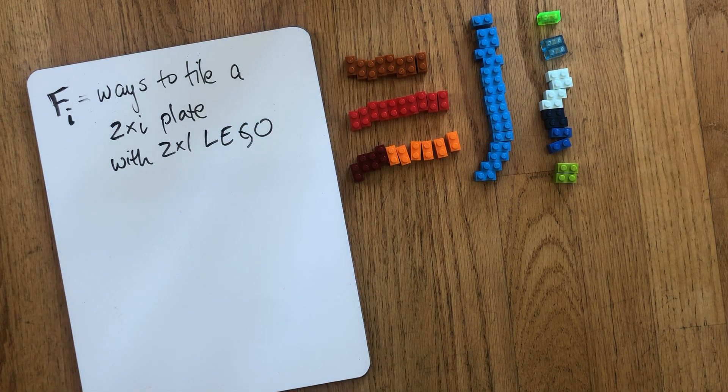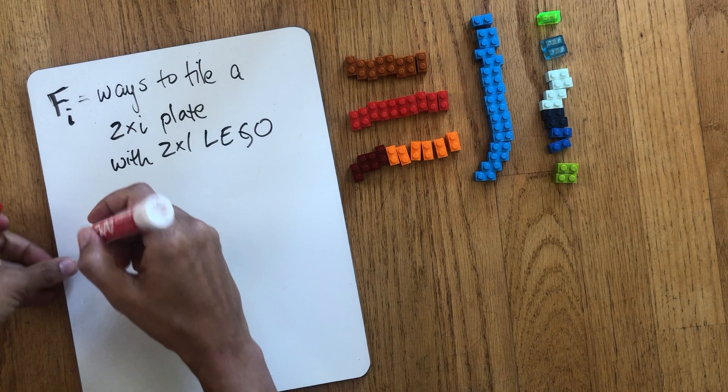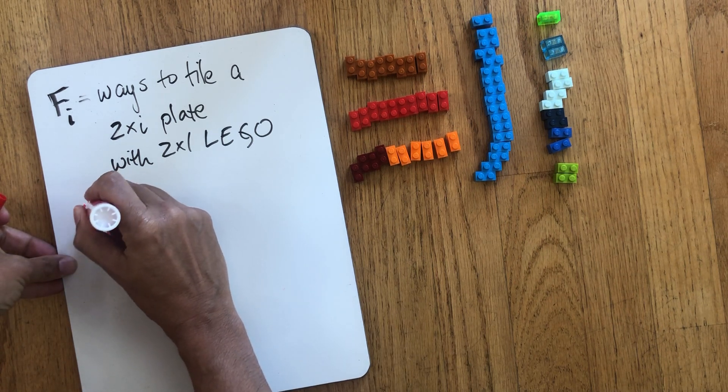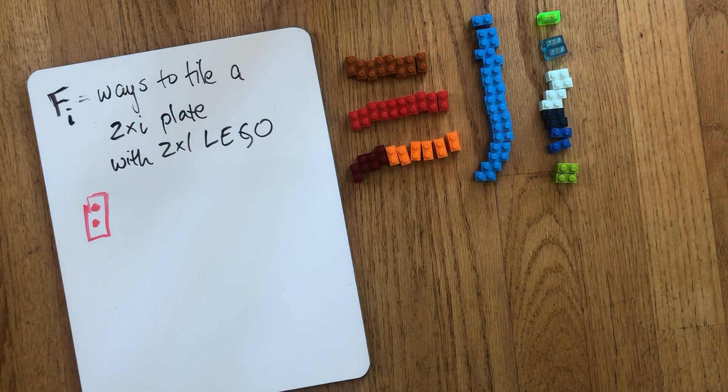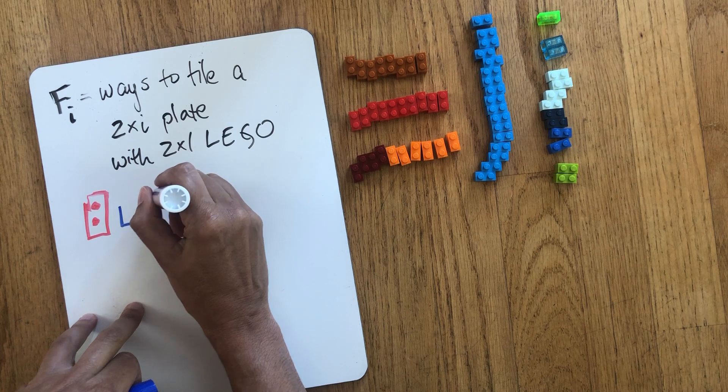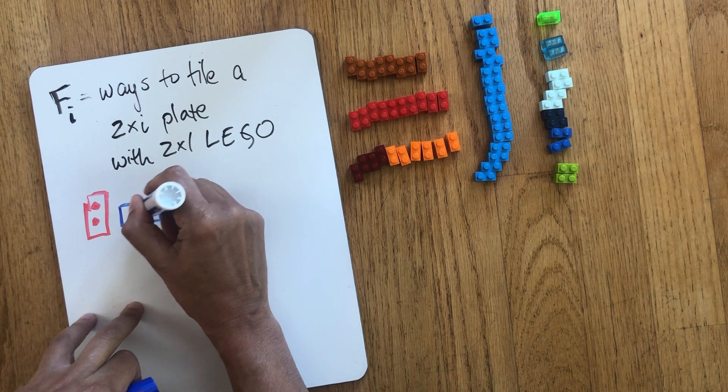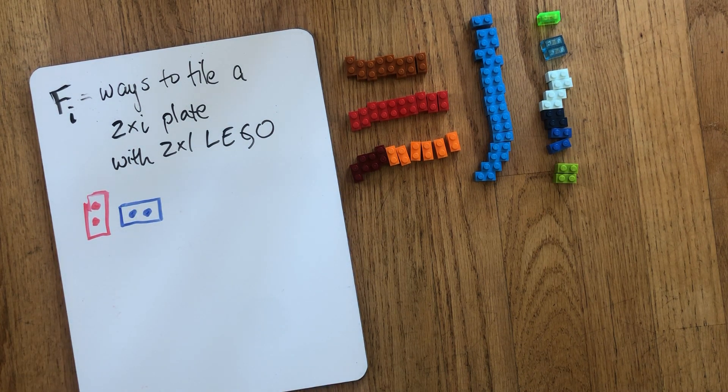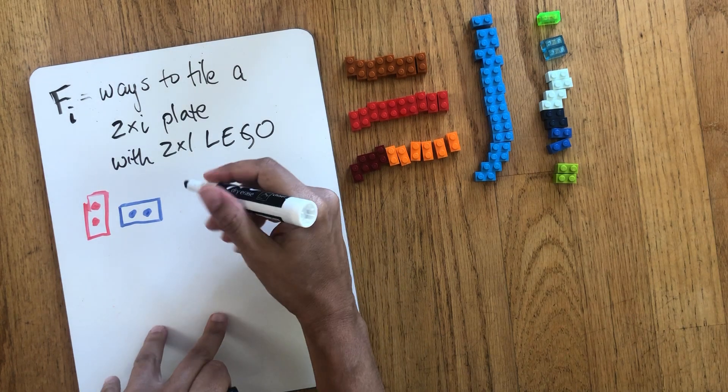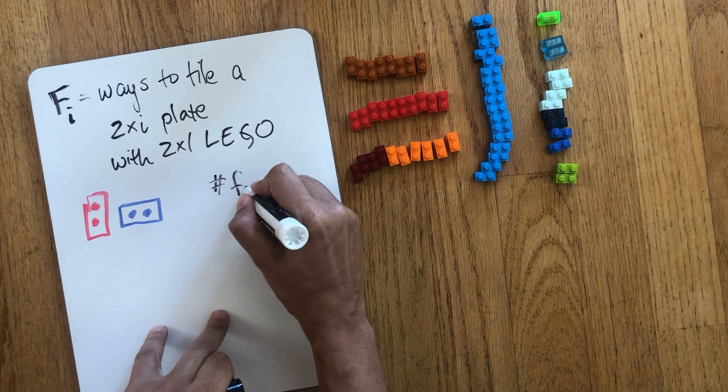So the pieces that we have, we can have two orientations for our Lego. So we can have a brick that's oriented like this, and you can see these are the warm palettes that I have here. Or we can use bricks that look like this. Okay, and one thing that we're trying to understand is we want to have a sense of what is the size of F_i.